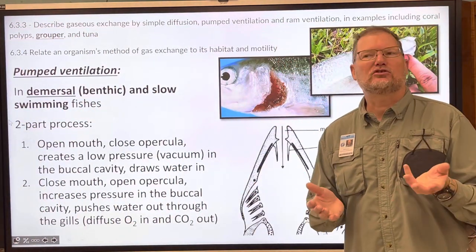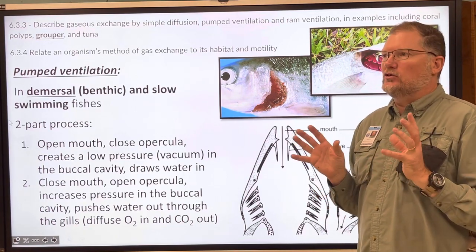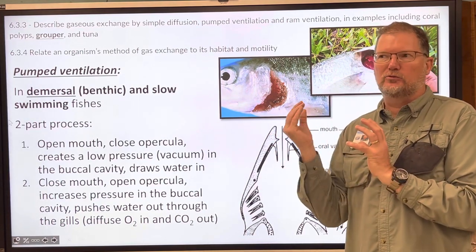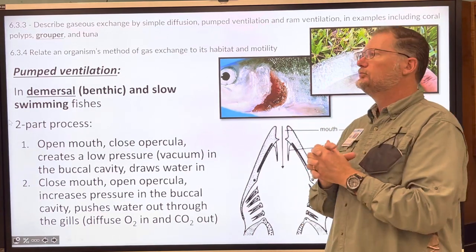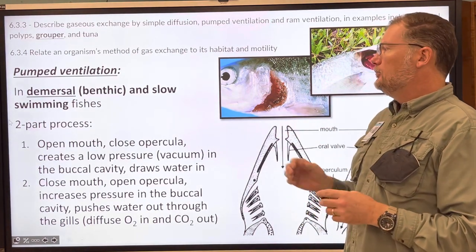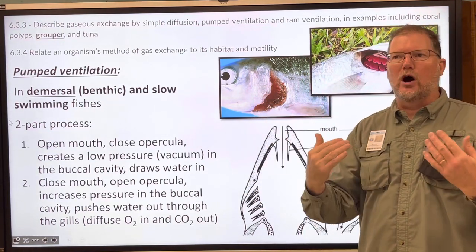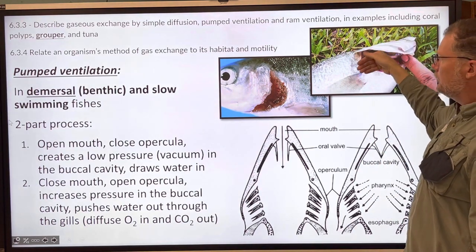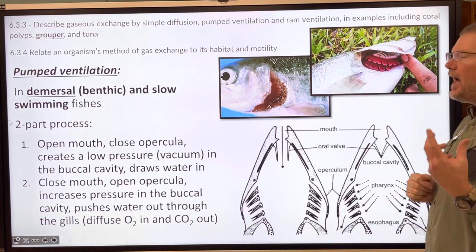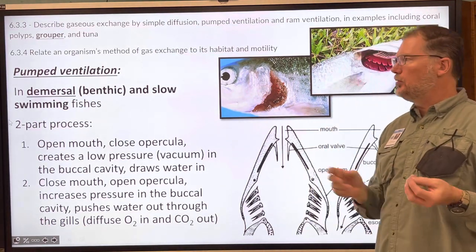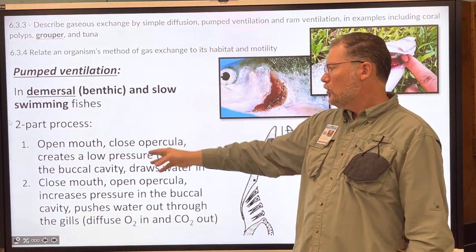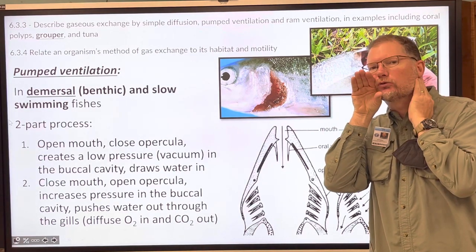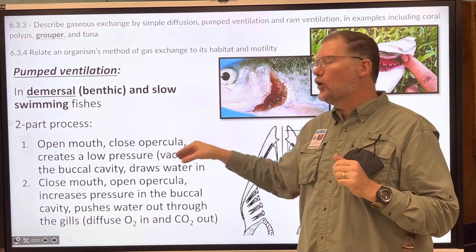A grouper essentially sits there waiting for prey. They're very fast — if you've ever seen a grouper bite something, they're lightning fast. Since they're not swimming, how does water get over their gills? They use a simple system called pump ventilation: they open their mouth while the operculum closes, creating a low-pressure vacuum in the buccal cavity which draws water in like a straw.